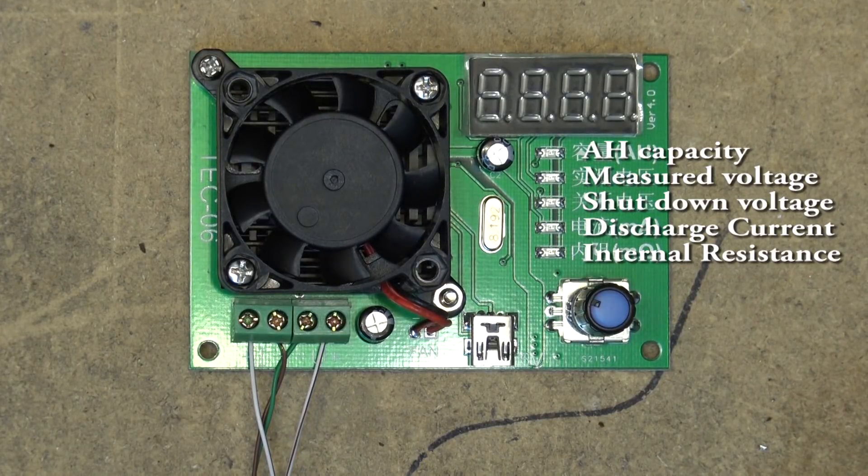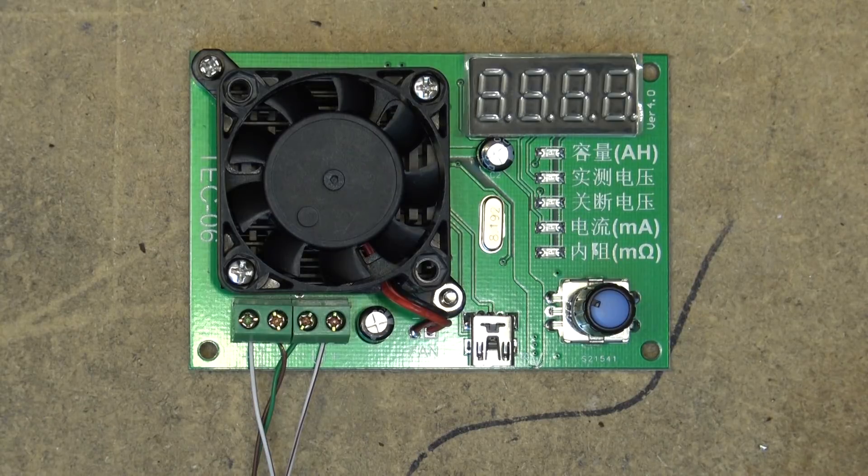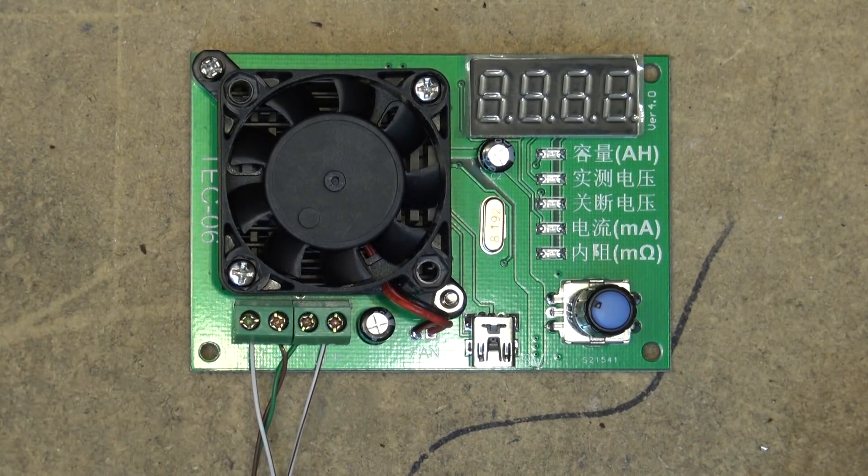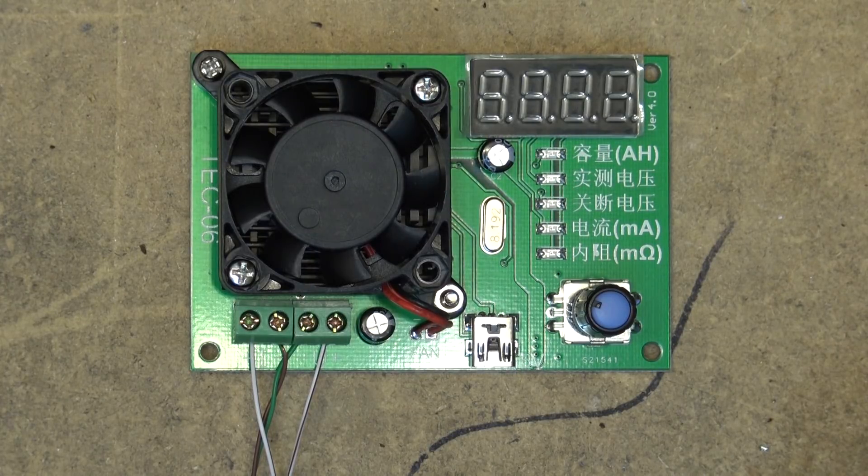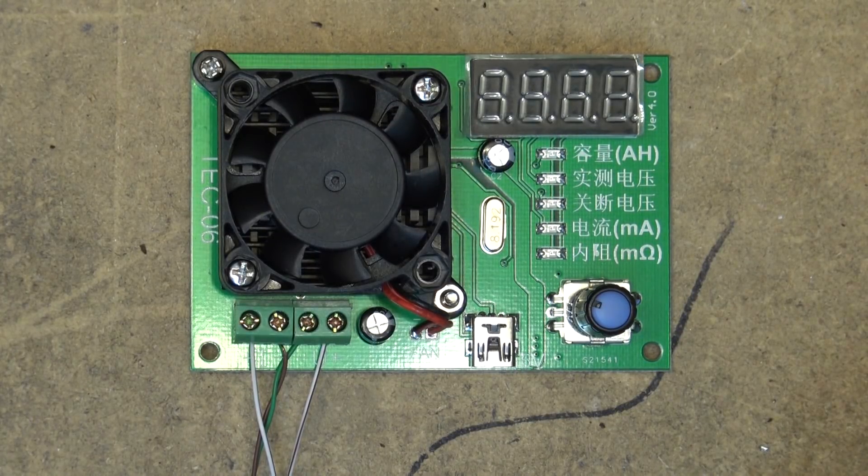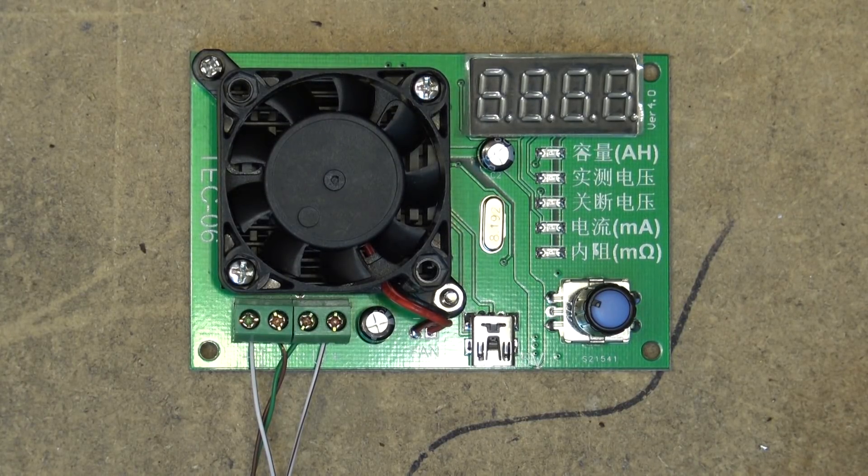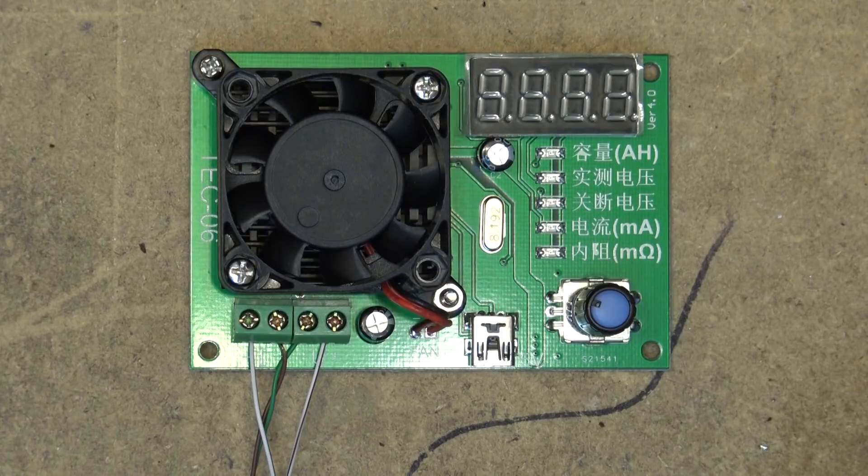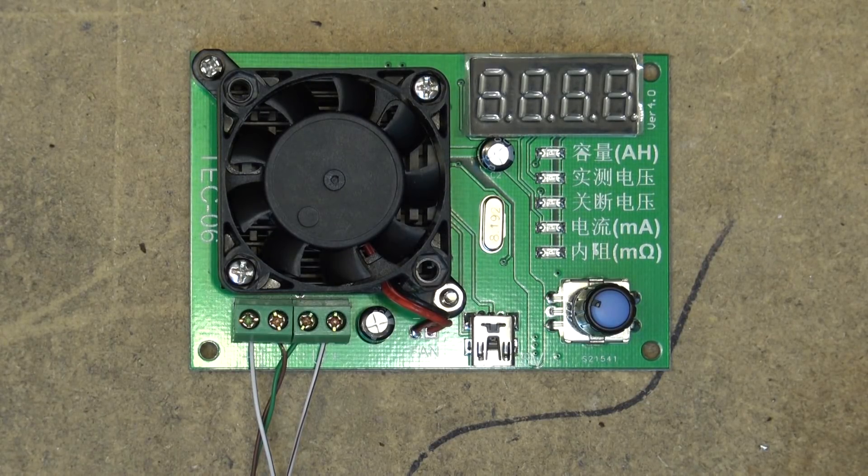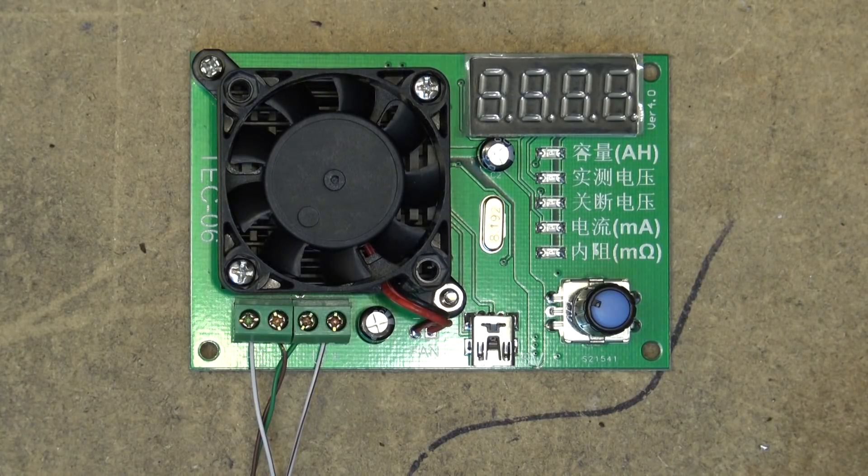It says when the battery current is not enough the detector will automatically set the current until the actual current meets the set value, so if your battery won't put out what you've set this to it'll figure it out and set it to maximum. You power it up with a USB power supply or computer. It'll detect the maximum detection capacity is 500 amp hours, so 500,000 milliamp hours.